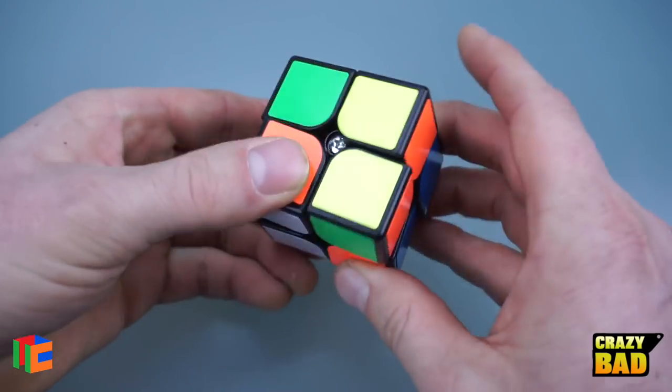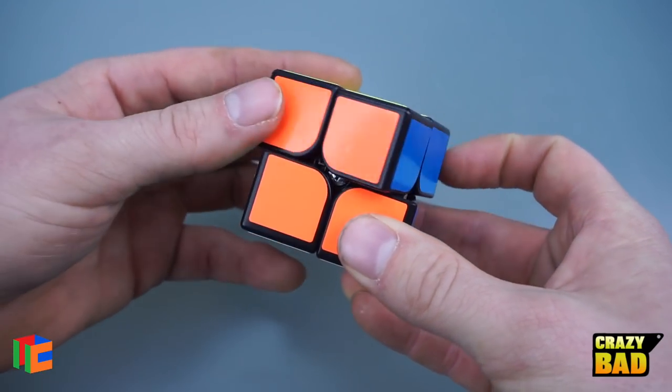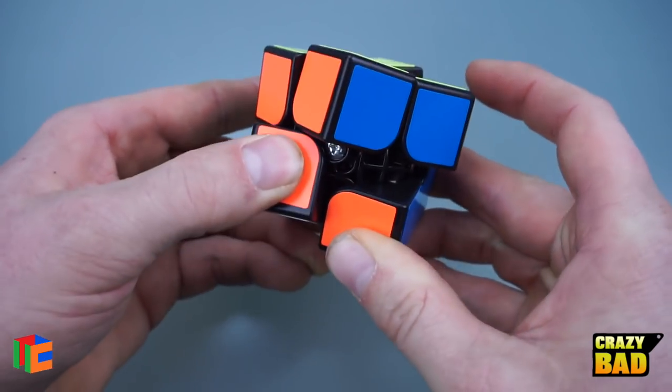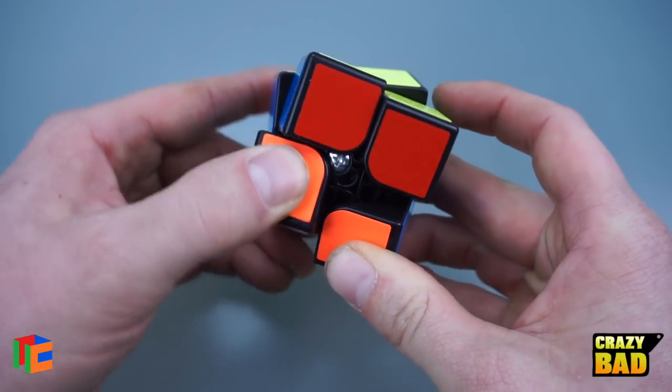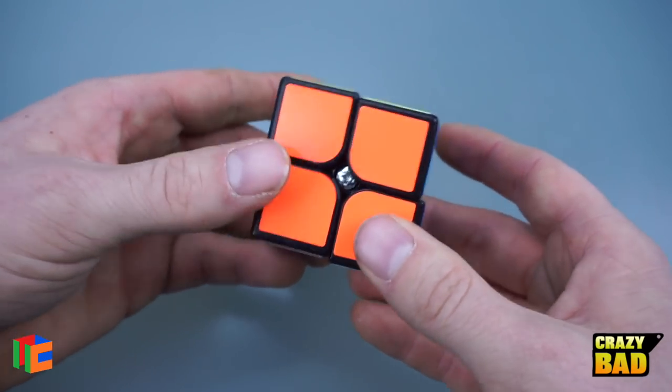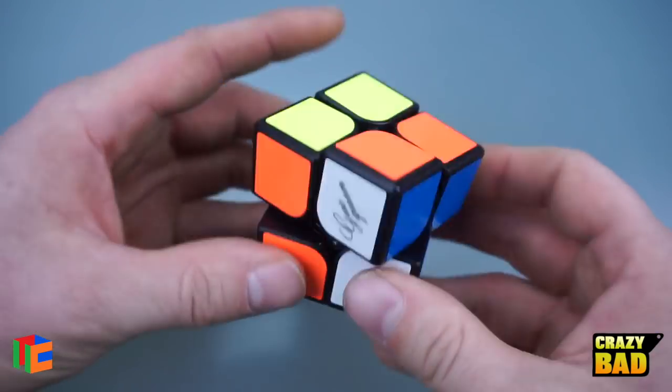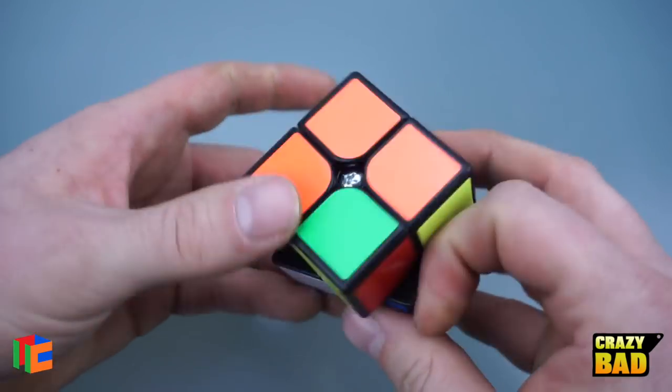Corner cuts very well, wow. Wow, reverse corner cuts are effortless, but you do get to that one point, just like on any 2x2, where it does want to lock up. But it never really locks up on me in solves when it's lubed and tensioned properly, so I don't think it should be too much of a problem.